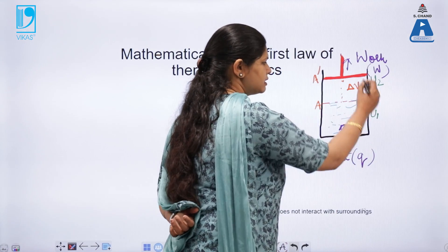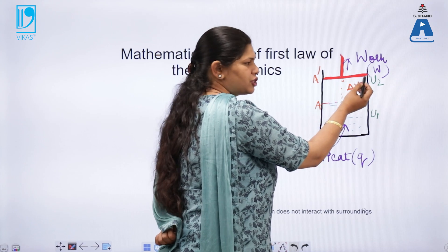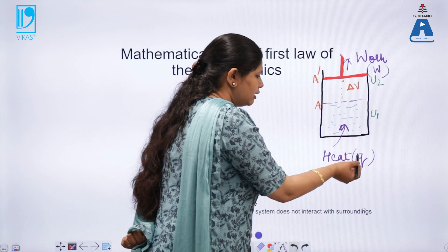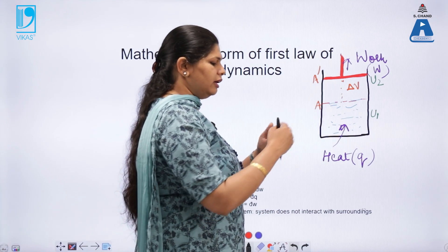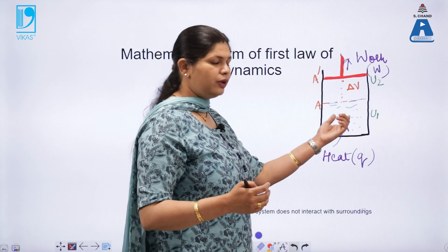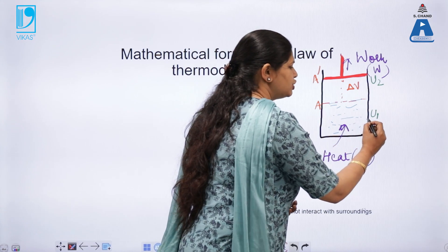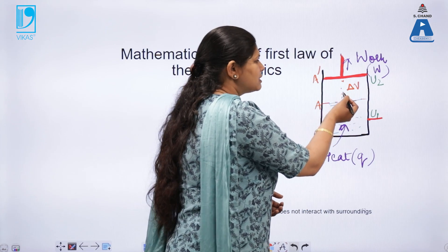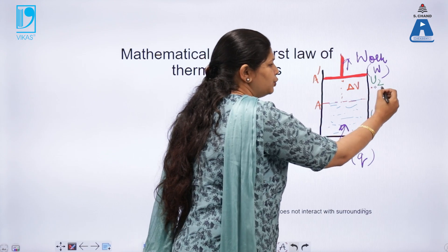So, in case we are taking the system, gaseous system in a container, which is there, this is a frictionless piston. And what happens is, suppose we are providing heat to the system. As I told you, heat given to the system will be positive as with the sign convention. This heat will not be used entirely as work. Some amount of heat will be taken by the system to raise its internal energy. So, let us say the initial internal energy of the system is U1. And on giving heat energy Q, the system raises its volume and it changes its internal energy to U2.